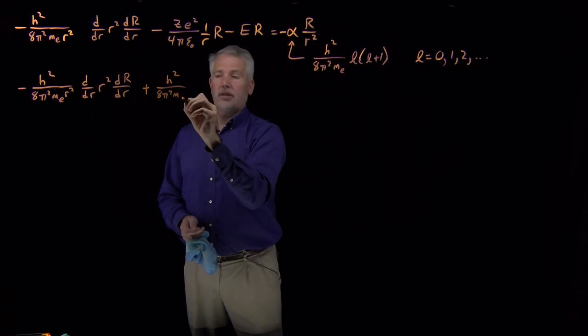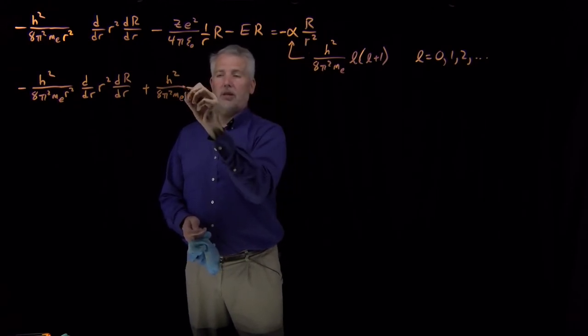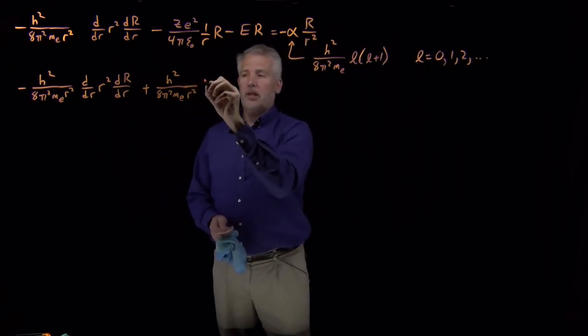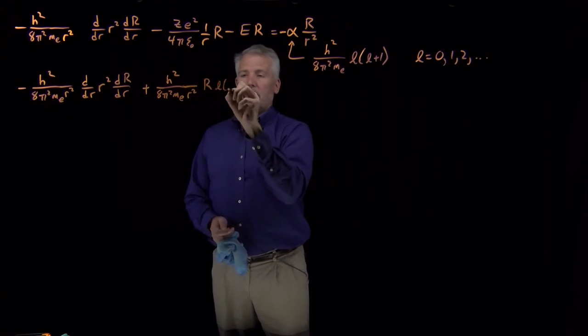Alpha is h squared over 8 pi squared, mass, divide by R squared, capital R times L and L plus 1.